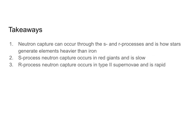Our takeaways: neutron capture can occur through the S and R processes, and this is how stars generate elements heavier than iron. S process neutron capture occurs in red giants and is slow. R process neutron capture occurs in type 2 supernovae and is rapid. You have now learned how stars are able to generate elements heavier than iron — hopefully this has widened your understanding of the universe. It is time for you to do some practice on your own. Best of luck and happy learning.